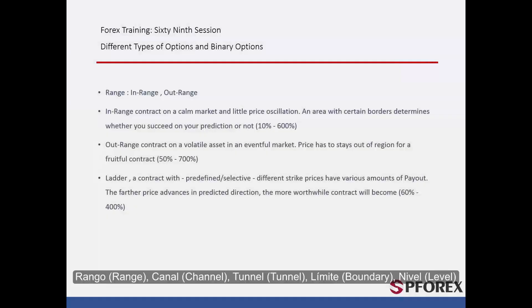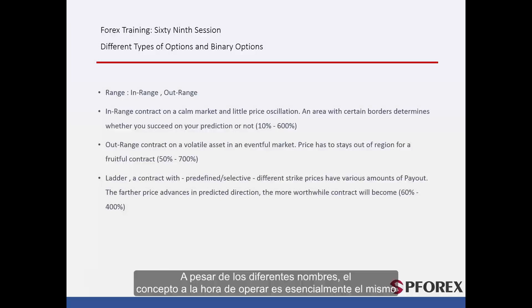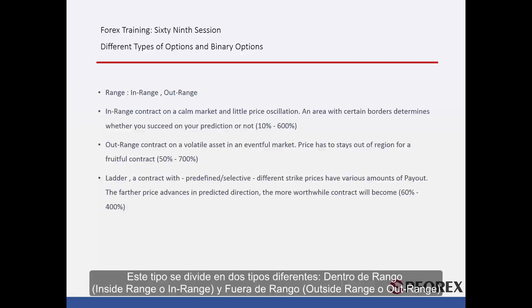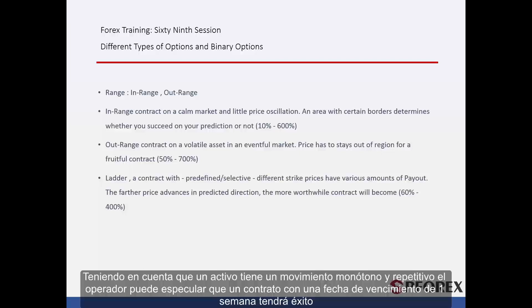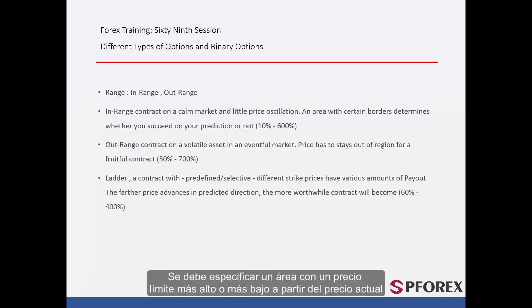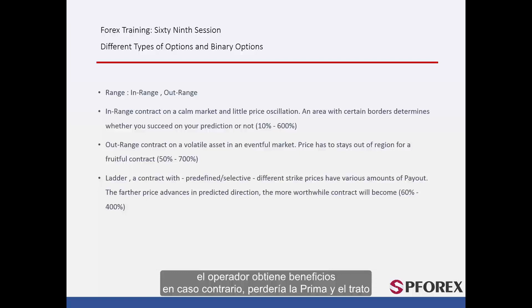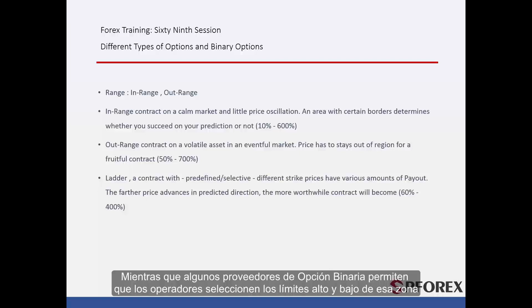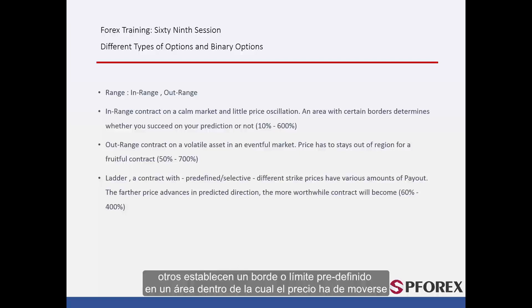Range, Channel, Tunnel, Boundary, and Level — despite different names, the concept of trading is still the same. Traders have to determine a region that price fluctuates inside or outside. This type is divided into two types: an inside range (in range) and an outside range (out range). For in range, considering that an asset has a monotonic motion, a trader may speculate that a contract with a 1-week expiration time would be successful. An area with higher and lower edge prices from the current price must be specified. If at the expiration time the price does not cross the boundaries of the defined area, then the trader gains profit; otherwise, they would lose the premium and the deal. Some binary option providers permit traders to select high and low boundaries of the region, while others represent a predefined edge of the area that price must move within.